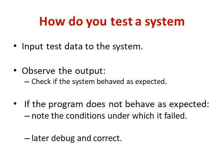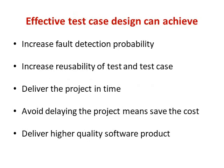If the program does not behave as per expectations, we take note of which condition or under which loop that particular execution failed. Later on, we correct it and debug the system again. The difference between the number of defects found by testing and the overall defects found for the software is also noted.